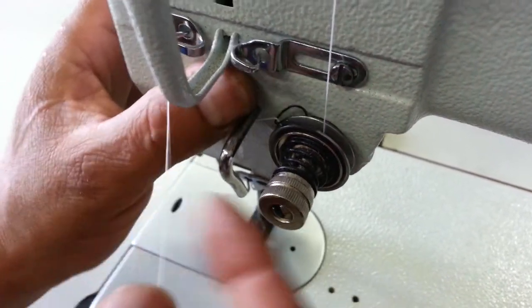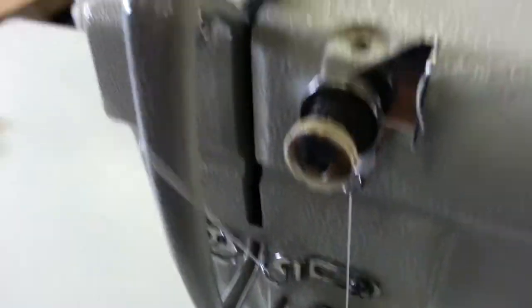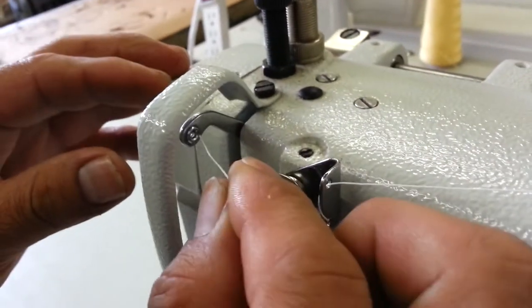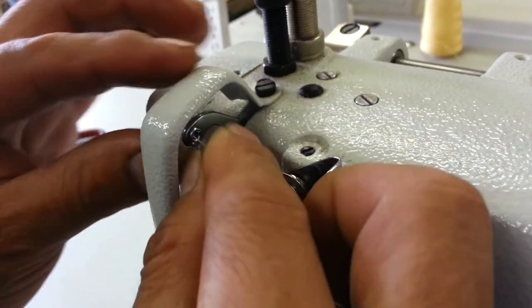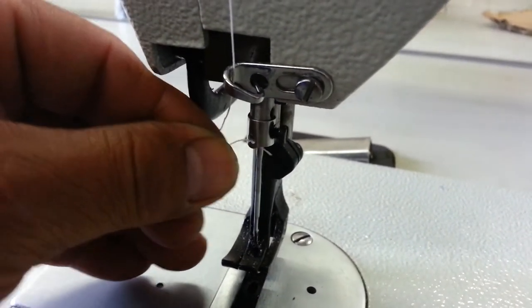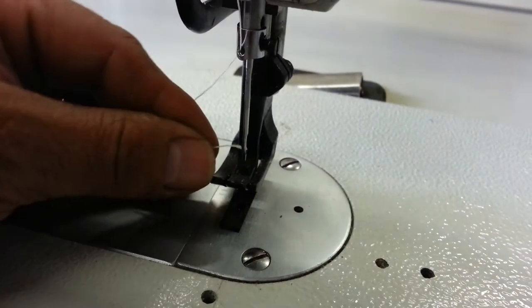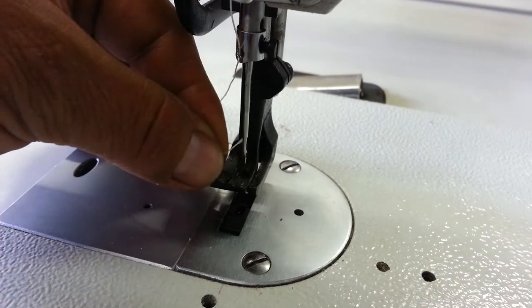Then you're going to go under this L bracket. We're going to come back up through this thread guide. Now through the take-up lever, which is all the way at the top. And then back down to that following thread guide through the other thread guide above the needle. And then there's that hole above the needle, which is important to thread.